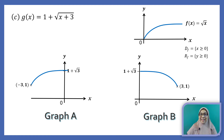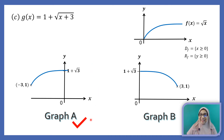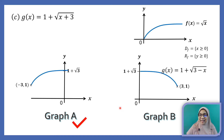But before that, I wish to clarify the correct function for graph B. If all of you remember when I asked which is the correct graph for the function g(x) equals 1 plus square root of x plus 3, most of you answered graph A — well done. This was followed by another question: who can write the correct function for graph B? The correct answer is g(x) equals 1 plus square root of 3 minus x.